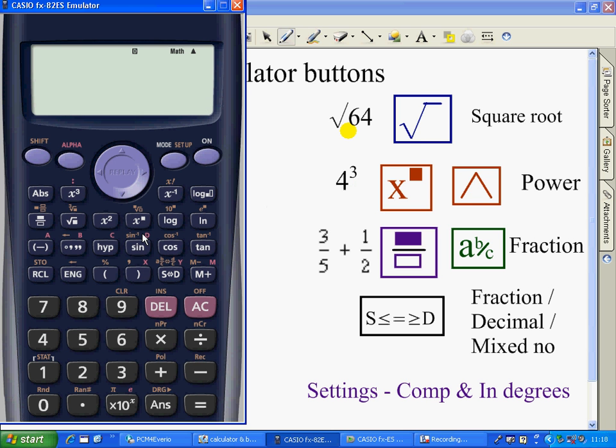The cubed button, the power button, is this one here. So, what I now do is I need to enter as the power of 3, and if I go back, using this button here.